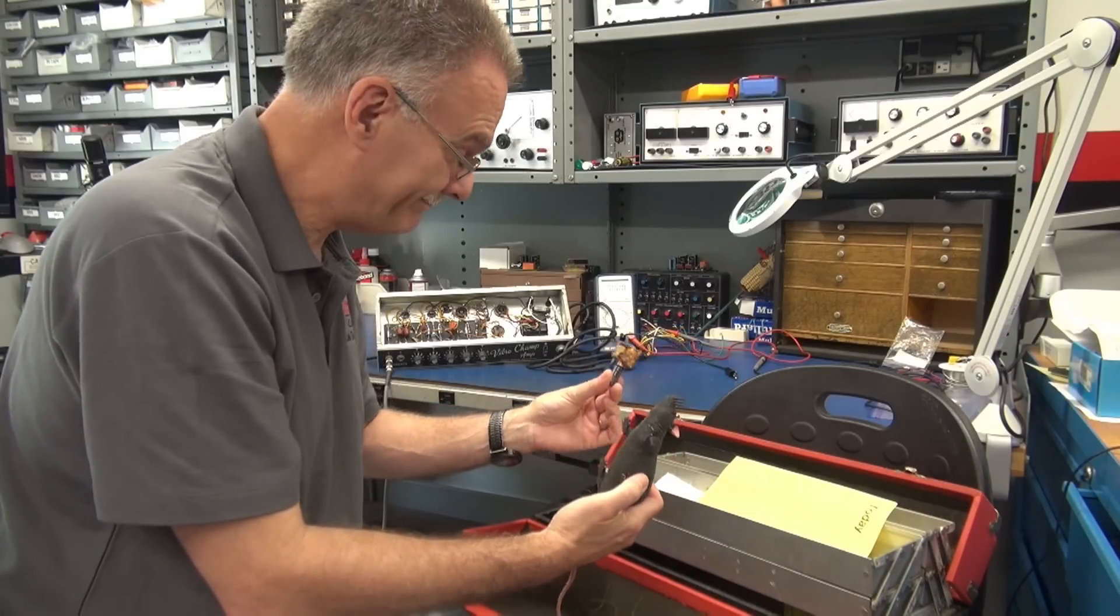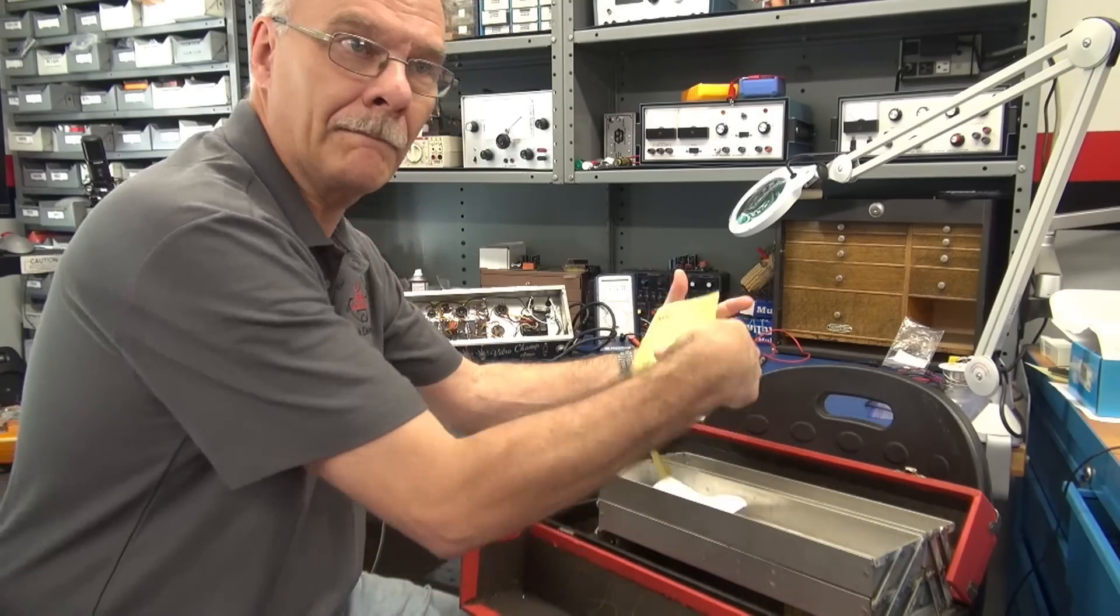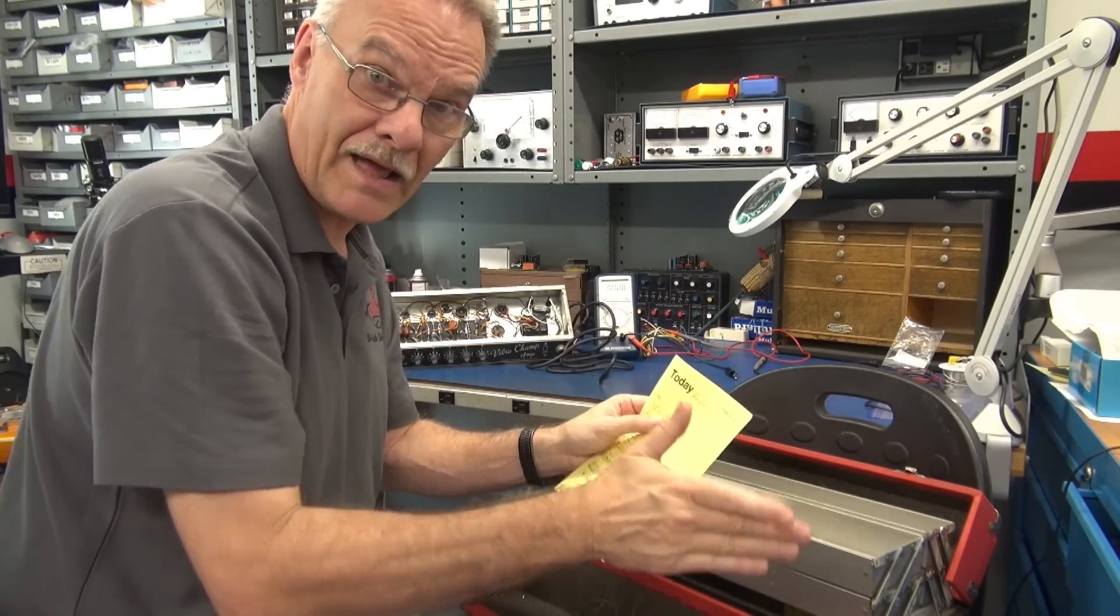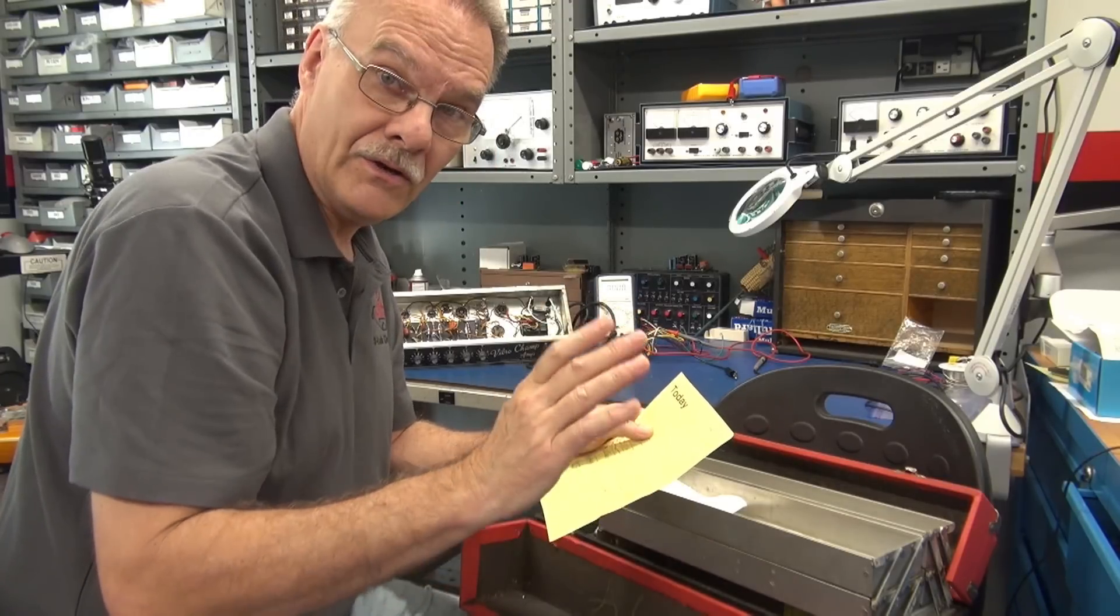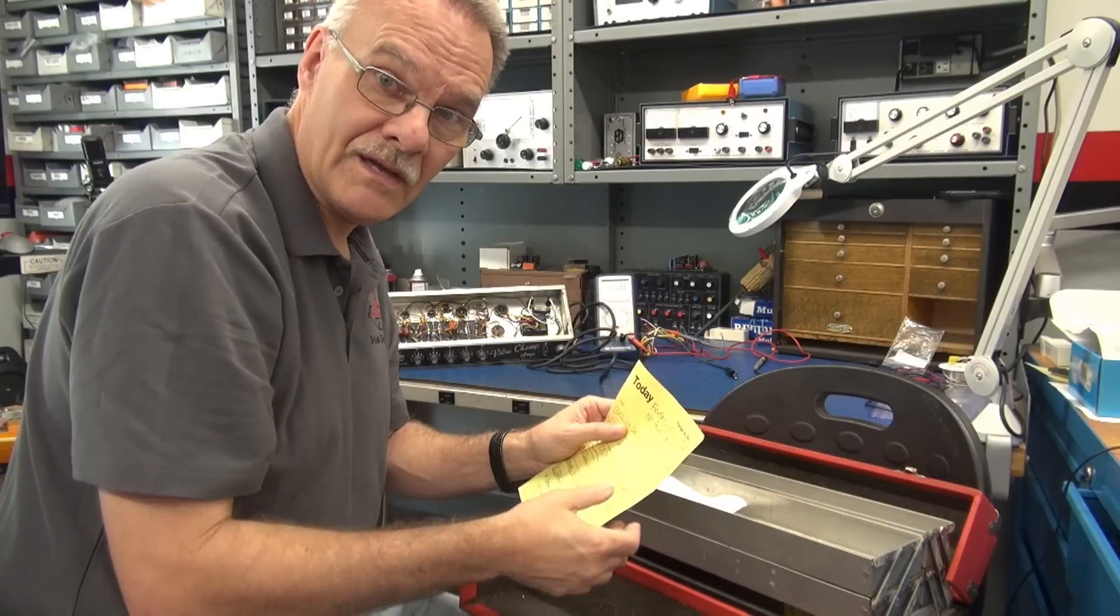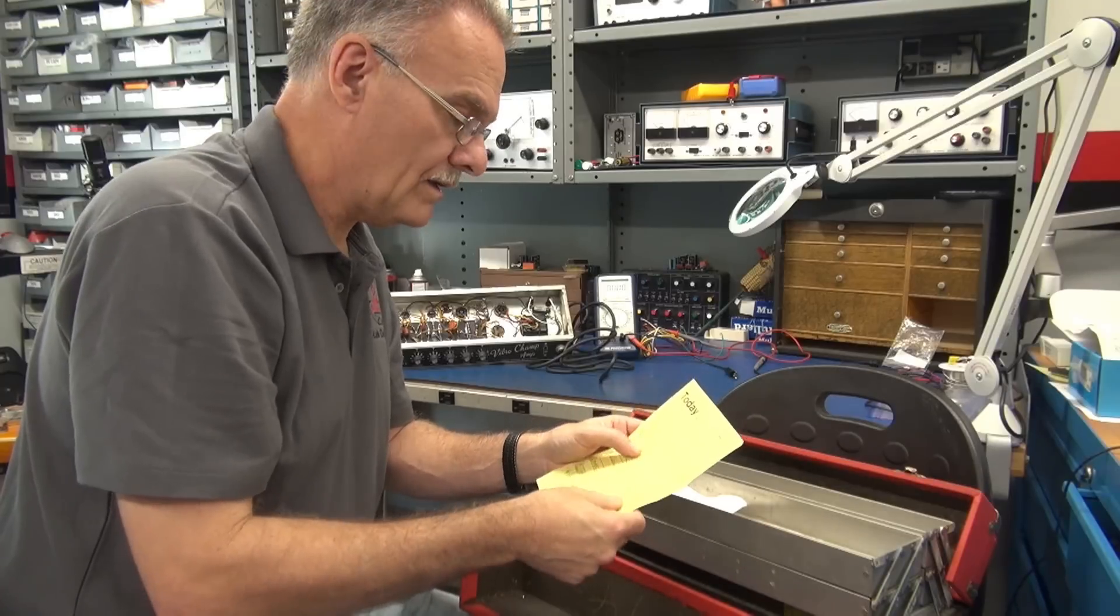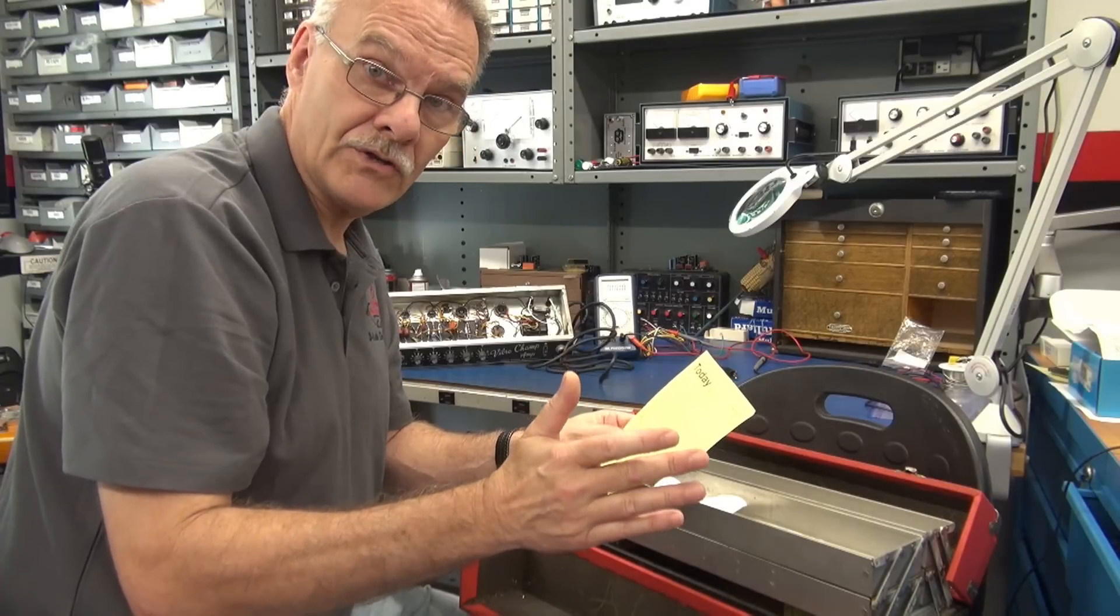Today we have a Fender Vibra Champ blackface amp from the original owner. Complaint: no power output. As we're going through this repair I'll give you guys three things to consider: is it a bad tube, is it a bad cap, is it a bad ground connection, or possibly is it a weak dilithium crystal?